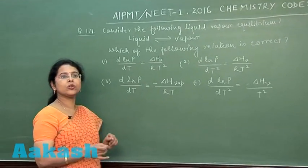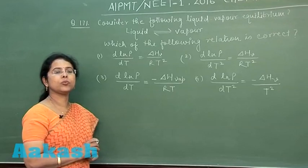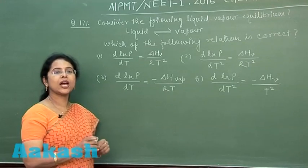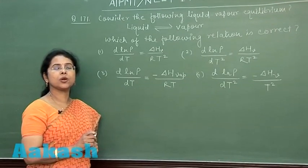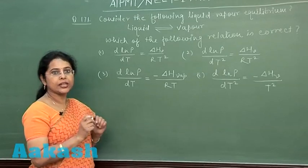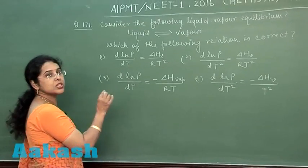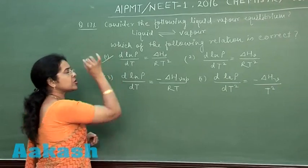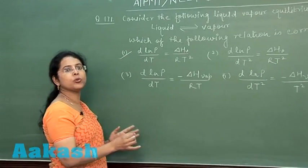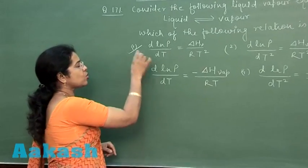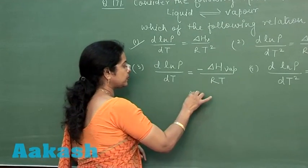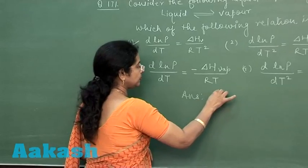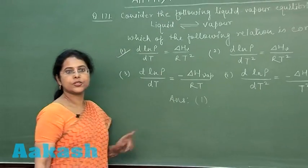Liquid and vapour whenever exist in dynamic equilibrium with each other, we can apply the Clausius-Clapeyron equation. In this case, the Clausius-Clapeyron equation formula is given in the first option. So this is a formula-based question and the first option is the correct answer.